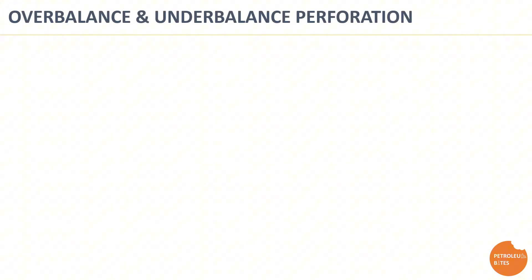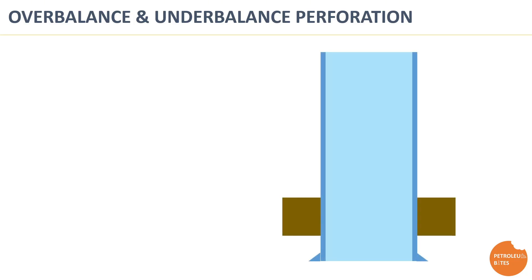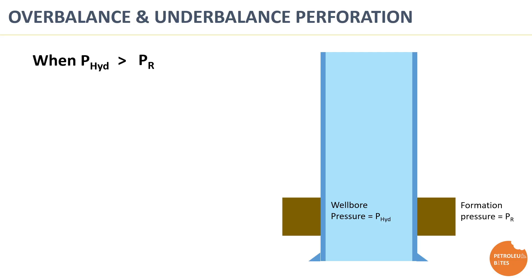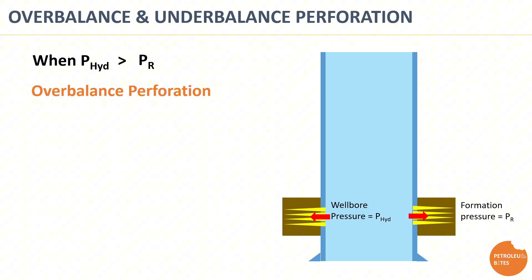When it comes to perforation execution, there are two conditions under which the job is executed: overbalance and underbalance. When the wellbore hydrostatic pressure is greater than the reservoir pressure, this is known as overbalanced perforation. Overbalanced perforation forces the wellbore fluid to go inside the formation. This method is favorable from a well control perspective, to control any kick that might occur from the formation, especially if the reservoir pressure is unknown.